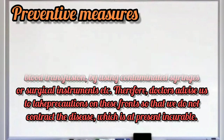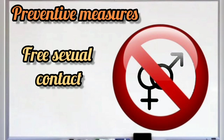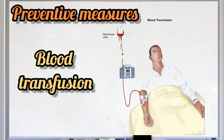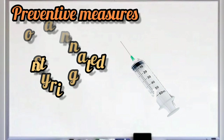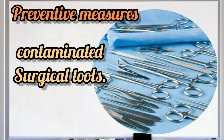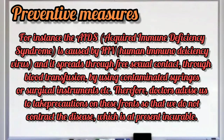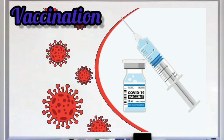So, avoid unsafe sexual contact, screen your blood before blood transfusion, do not use contaminated syringes, and do not use contaminated surgical tools. Therefore, doctors advise us to take precautions on these fronts so that we do not contract these diseases, which are presently incurable.